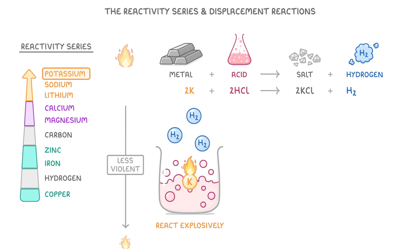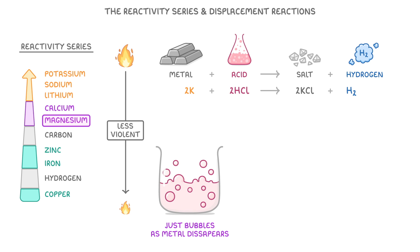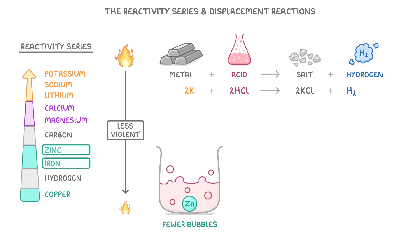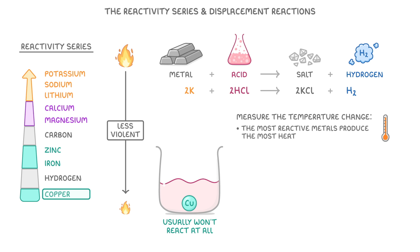The reactions would then get gradually less violent as we go down the series, and by the time we get to magnesium, it would just produce lots of bubbles as the solid metal disappears in the acid. We'd then see fewer bubbles with zinc and iron, and copper usually won't react at all. Rather than just watching the reactions to see how violent they are, we can also measure the temperature change, because the most reactive metals will produce the most heat.